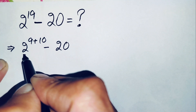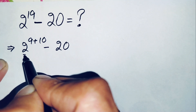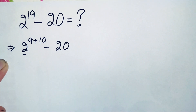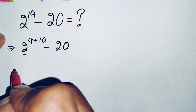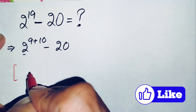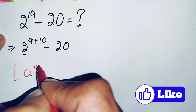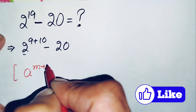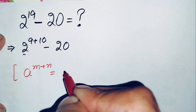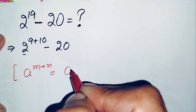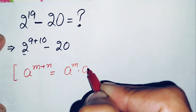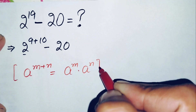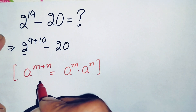Now here, in this first number, we will use an exponent math property: a raised to power m plus n. We will use this exponent math property, where a raised to power m plus n can also be written as a raised to power m times a raised to power n, for any numbers m and n.